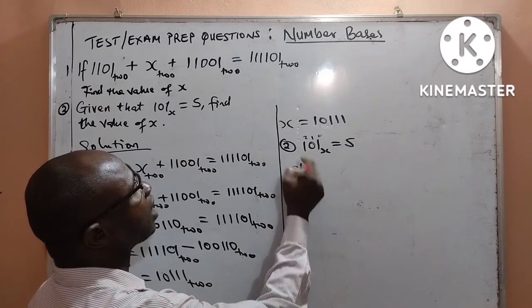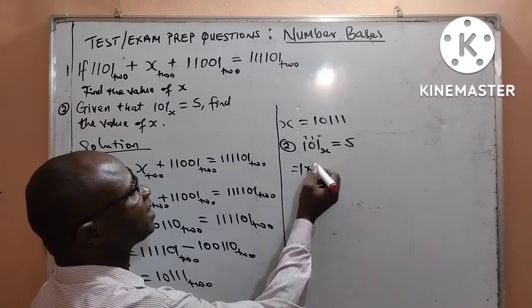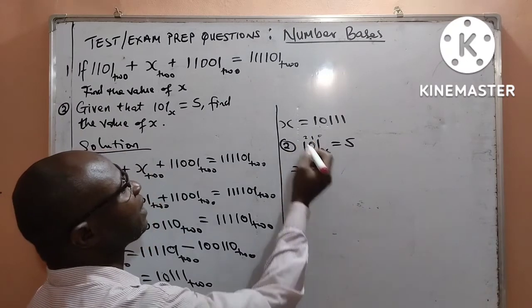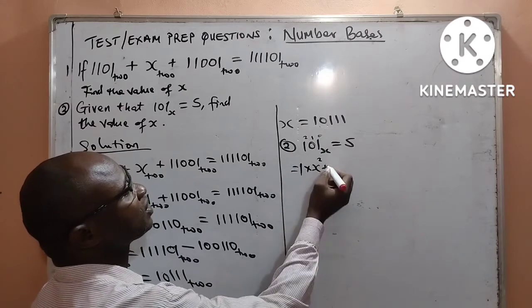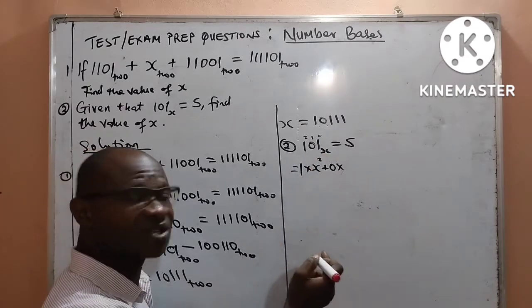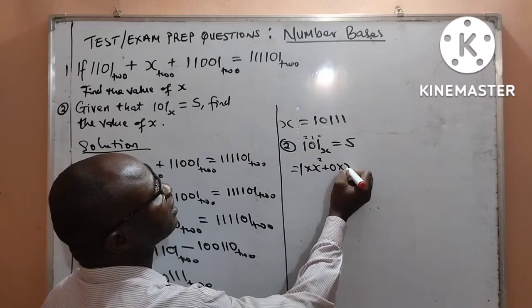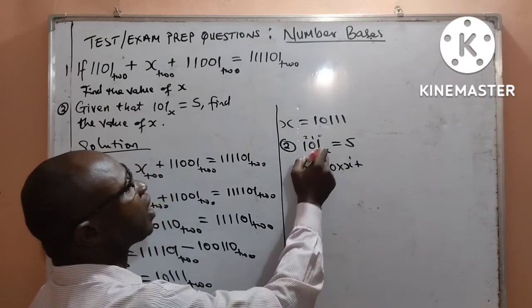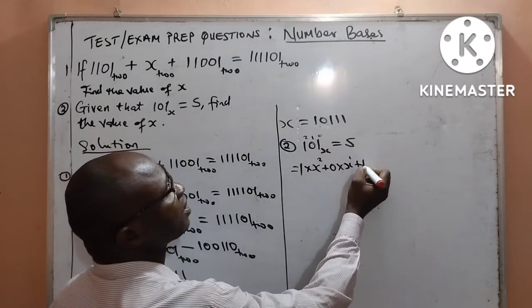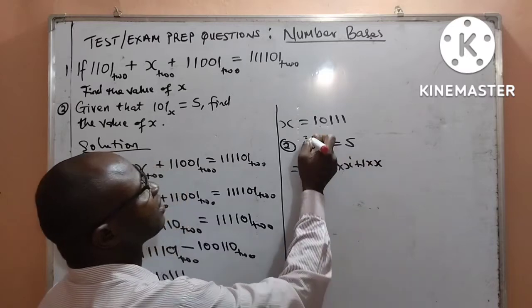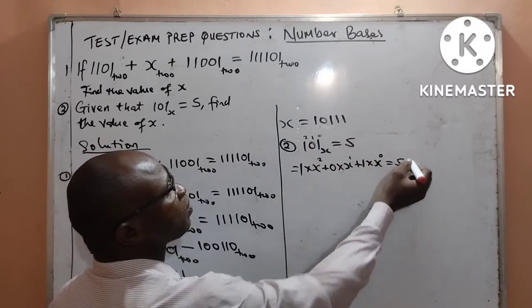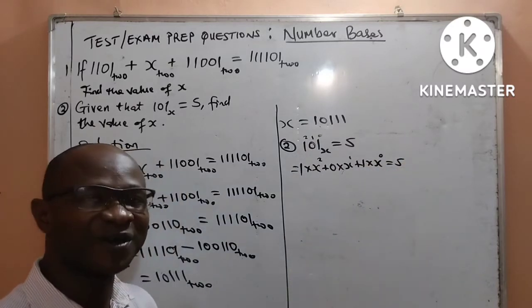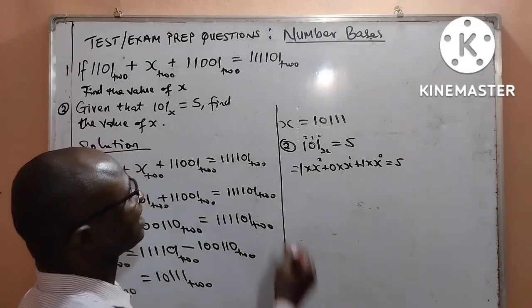Therefore, we are now going to assign powers starting from 0, 1, 2 to the digits. And that means I shall be having here 1, the first digit multiplied by the base, which is x, raised to power 2, plus 0, the second digit multiplied by the base, raised to power 1, plus 1, the third digit multiplied by the base, raised to power 0. So, everything is equal to 5. This is how we can convert to base 10.